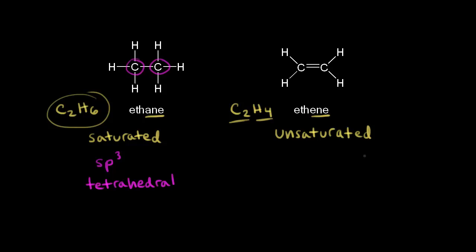For ethene, this carbon and this carbon are both sp2 hybridized. We know the geometry around an sp2 hybridized carbon is trigonal planar, so there's planar geometry around both of these carbons.